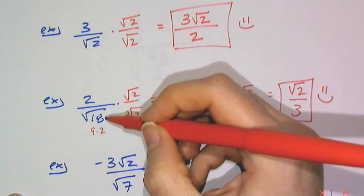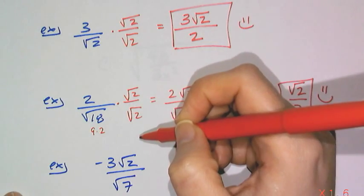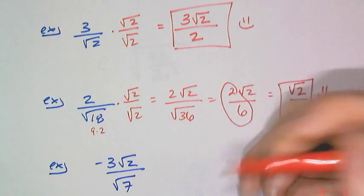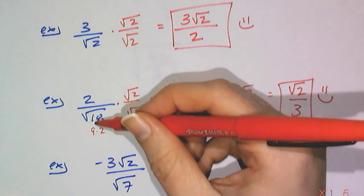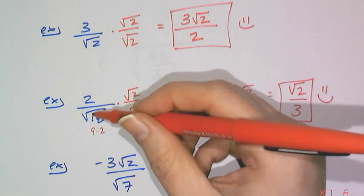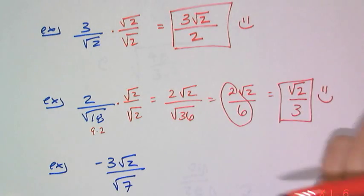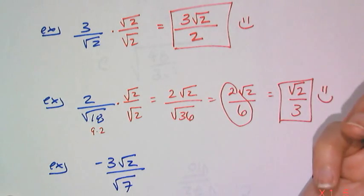Now, if you wanted to, you could have multiplied it by root 18 over root 18, and you would have had 2 root 18 over 18, which you can then simplify. And if you simplified this in the beginning to be 3 root 2, you'd multiply it by root 2 over root 2, and you'd get the exact same result, no matter how you did it.